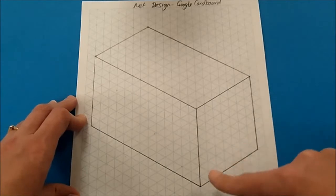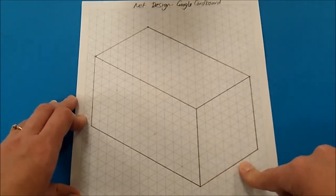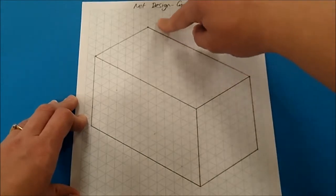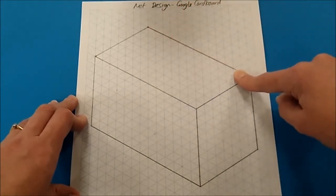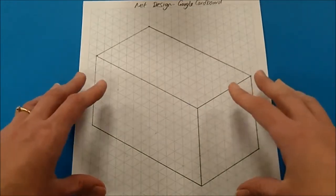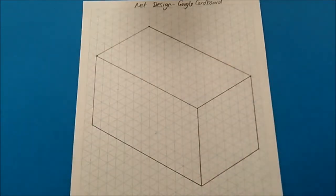In terms of measurements, this one down here is 70 mil, this one up here is 80 mil, and this one over here is 130 mil. Once you've constructed this cuboid, I'm now going to use a creative method and draw the Google Cardboard inside it.